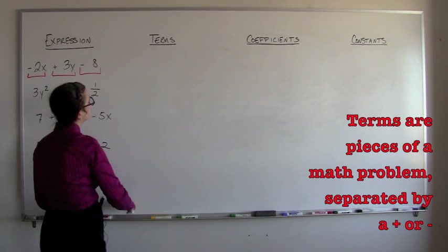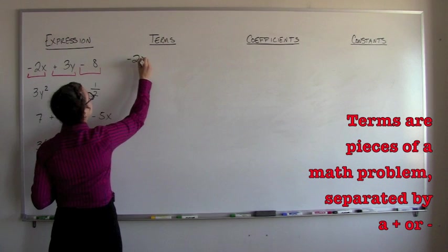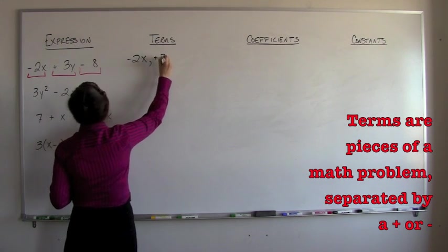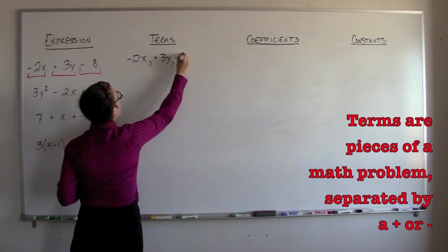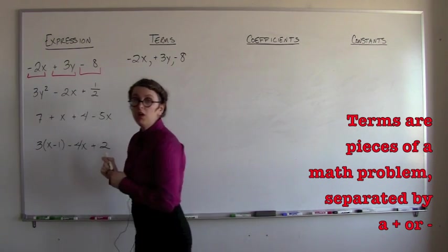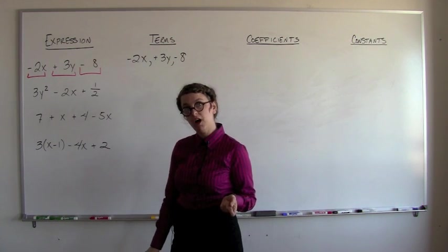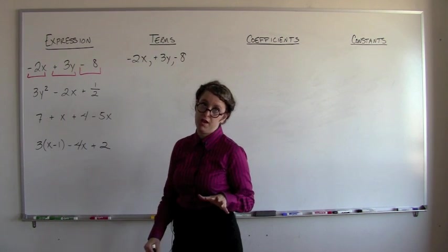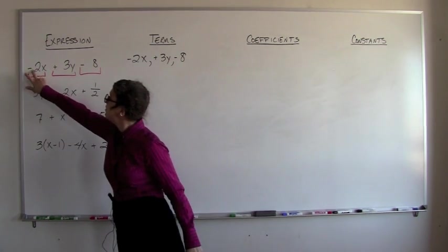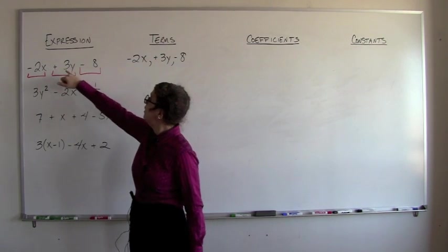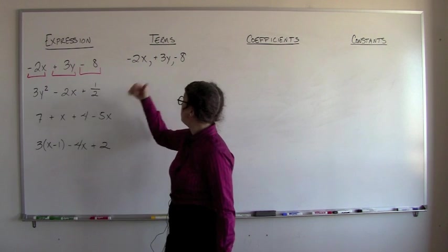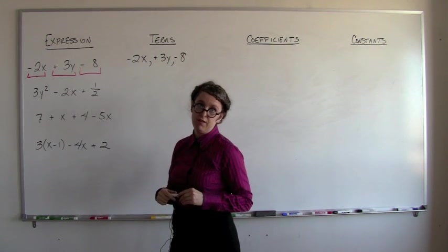So I'm going to write those over here. I've got negative 2x, positive 3y, and negative 8. So I want to remind you that whatever sign is directly to the left of a number belongs to that number. So this minus sign belongs to the 2x, this plus sign belongs to the 3, this minus sign belongs to the negative 8.